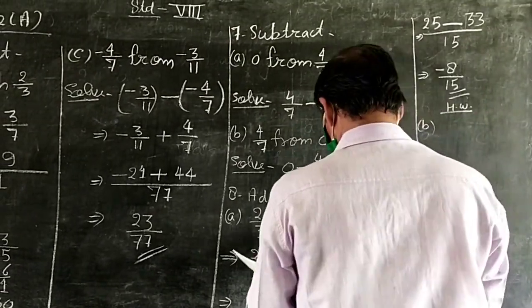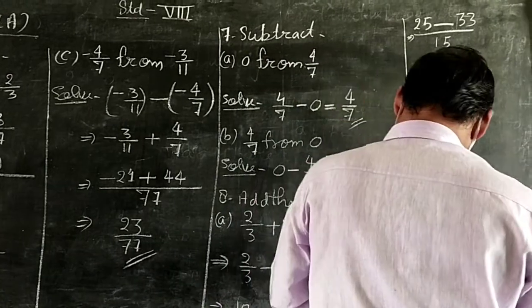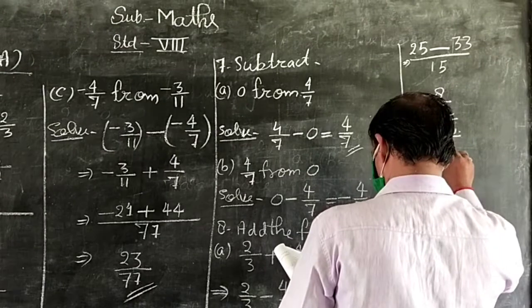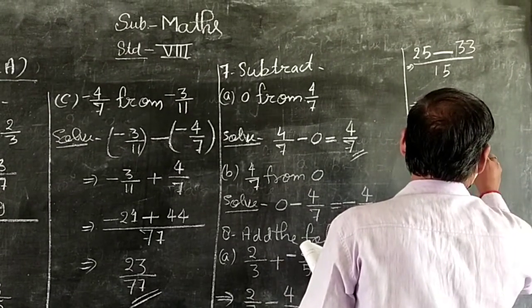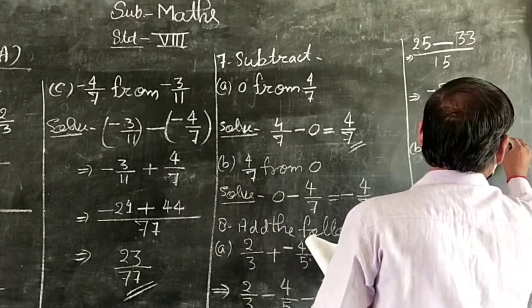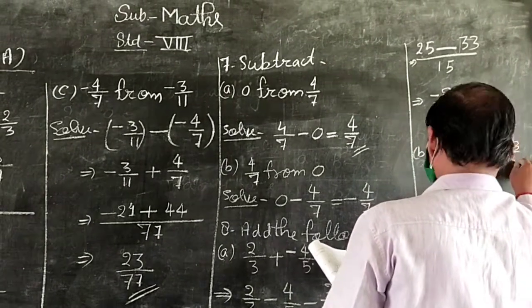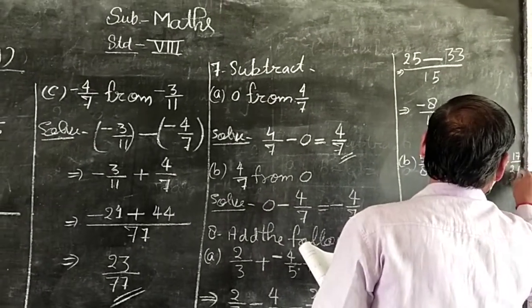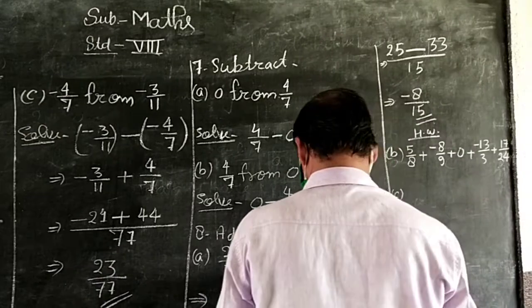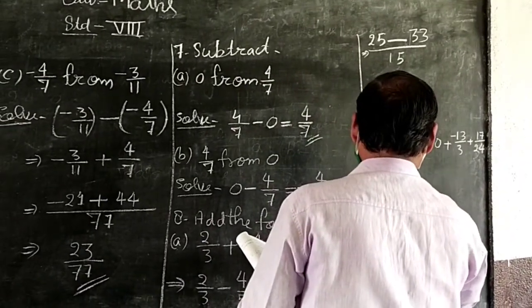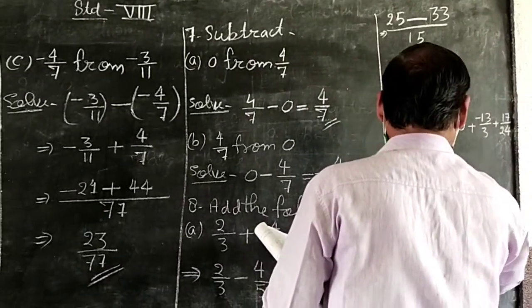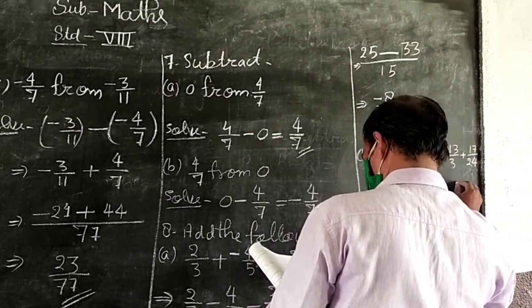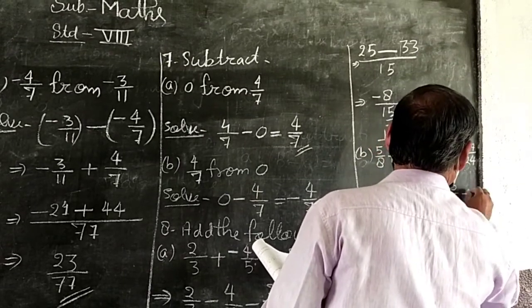Part B: 5 upon 8 plus minus 9 upon 9 plus 0 plus minus 13 upon 8 plus 17 upon 24. Part C: minus 13 upon 20 plus 11 upon 14 plus minus 5 upon 7 plus 1.